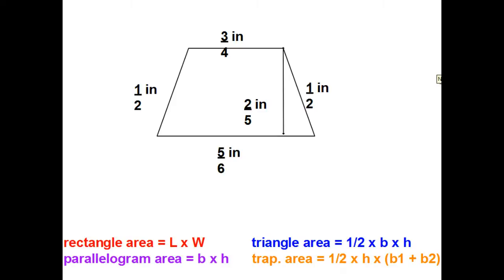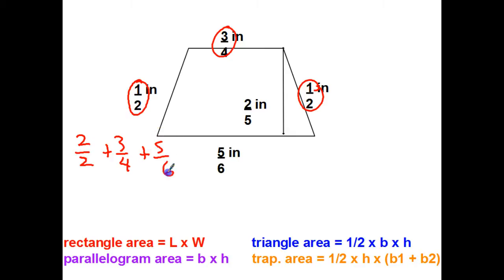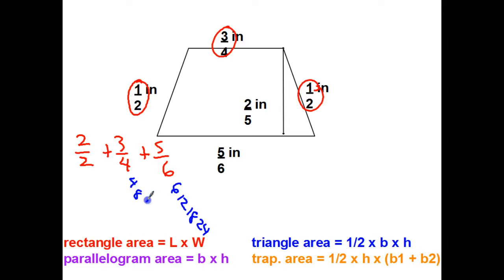Let's see what numbers we're adding up for the perimeter: one-half plus one-half is two-halves, plus three-fourths, plus five-sixths. We've got three numbers with three totally different denominators. We need a common multiple — checking: 6, 12, 18, 24... and 4, 8, 12 — we get 12 there, and 12 is even so 2 works. Twelve is the new denominator.